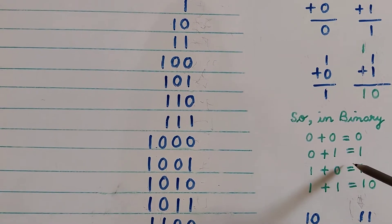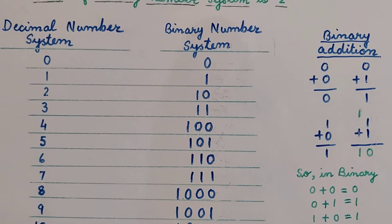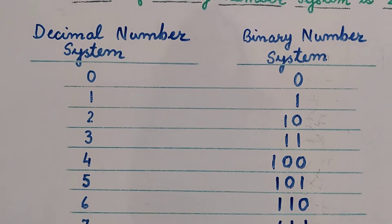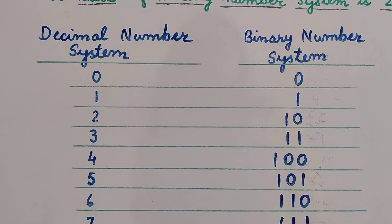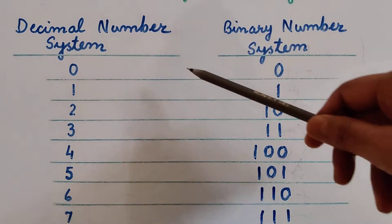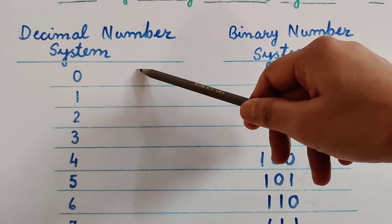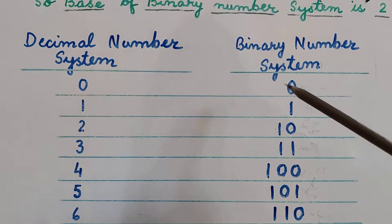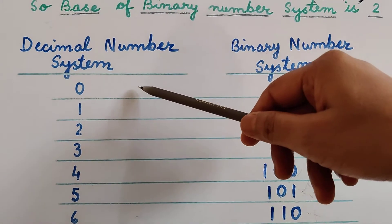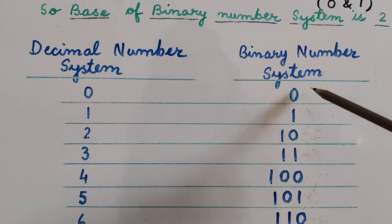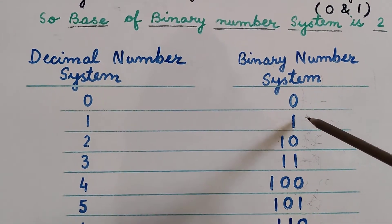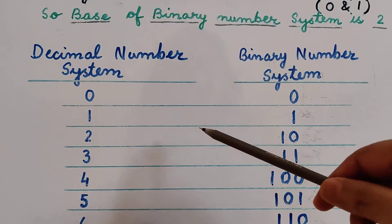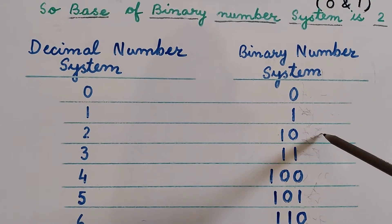Let us now move on and see how we can represent any given decimal number in binary. Decimal 0 is written as 0 in binary, and decimal 1 is written as 1 in binary. Now, what will be the value of decimal 2 in the binary number system?